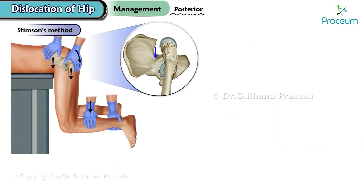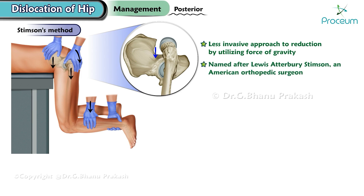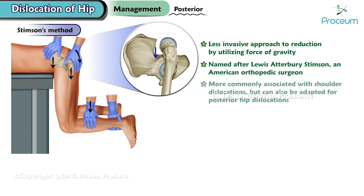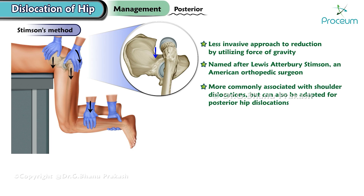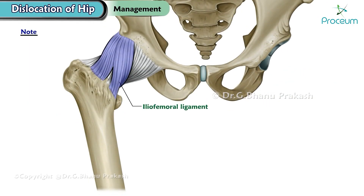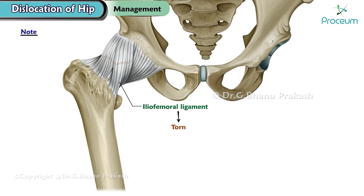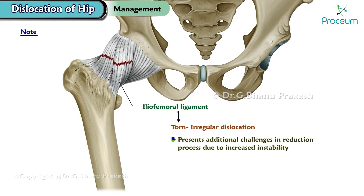Stimson's method is a technique that can be utilized to manage posterior hip dislocation. This method offers a less invasive approach to reduction by utilizing the force of gravity. It is named after Louis Atterbury Stimson, an American orthopedic surgeon, and is more commonly associated with shoulder dislocations but can also be adapted for posterior hip dislocations. Note: the stability of the hip joint is heavily reliant on the iliofemoral ligament, commonly referred to as the Y ligament of Bigelow. If this ligament is torn, it can lead to an irregular dislocation, presenting additional challenges in the reduction process due to increased instability.